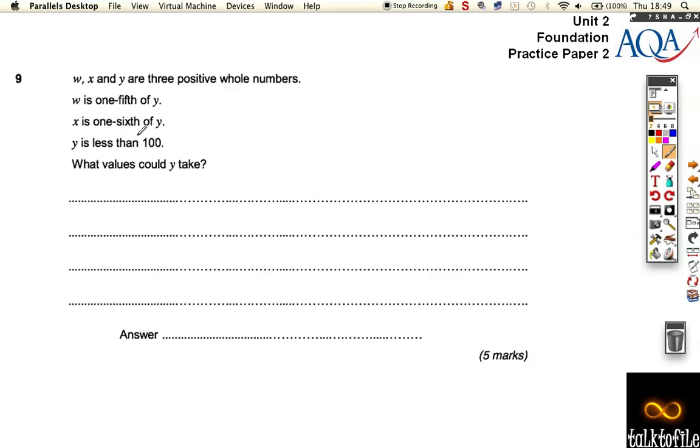And y is less than 100. What values could y take? Well, if it's one-fifth, we must be able to divide y by five. So let's make a list of the fives: five, ten, fifteen, twenty, twenty-five. I don't know how far I need to go—actually I do, but when I answer this question in the exam I don't—so I'm just going to make a list that goes up to fifty-five for the moment.